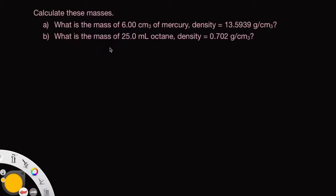Let's look at this question from the OpenStax textbook. We have some mercury. It has a density of 13.5939 grams per cubic centimeter and we've got this volume 6.00 cubic centimeters and we want to know what is the mass.